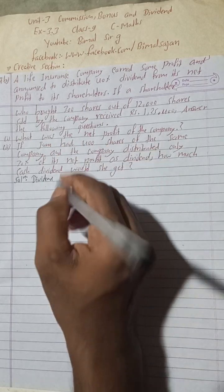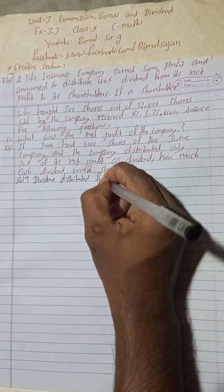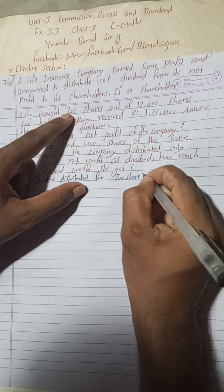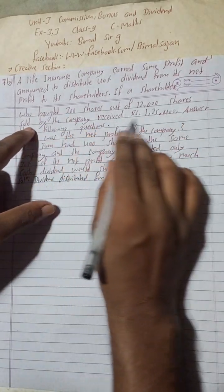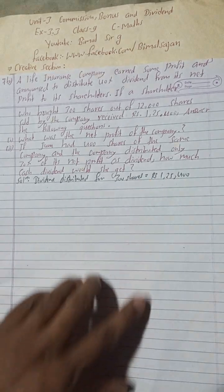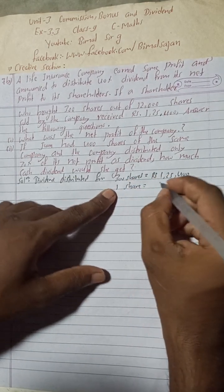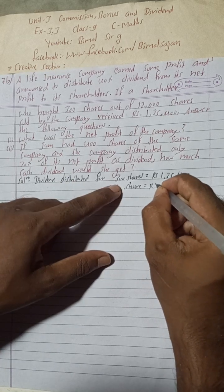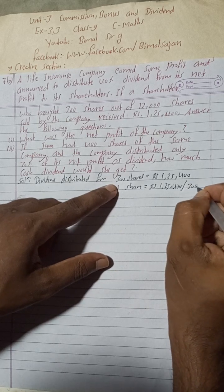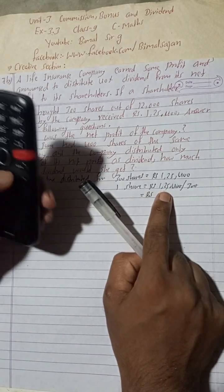Dividend distributed for 300 shares is Rs 1,25,400. So for one share, the dividend distribution is Rs 1,25,400 divided by 300. Now let's calculate: 1,25,400 divided by 300. First simplify: 1254 divided by 3.